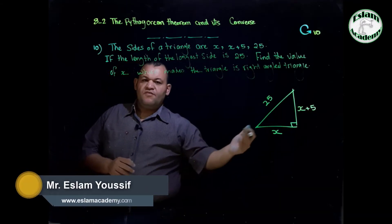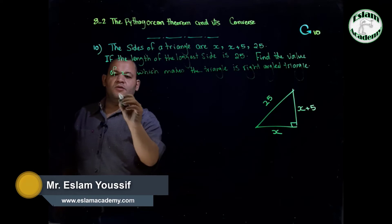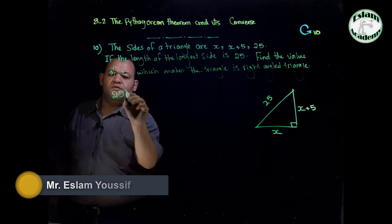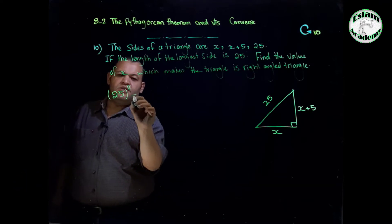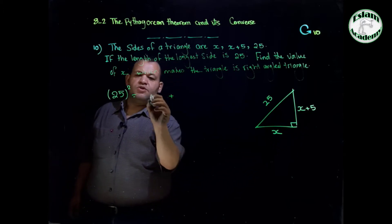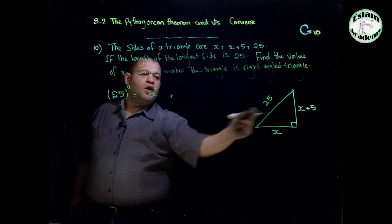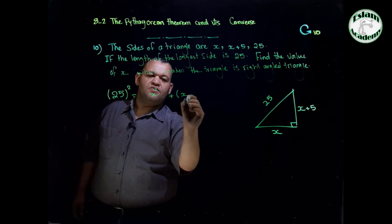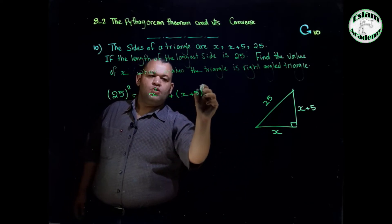As we said before, to find the value of x we are using the Pythagorean theorem. So 25 to the power 2 equals the sum of the squares of the other two sides. The first side is x to the power 2 and the second side is x plus 5 to the power 2.